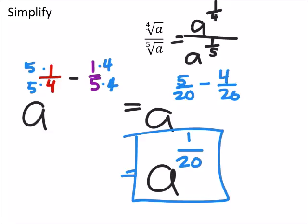I suppose if you wanted to write this in radical form, it'd be the twentieth root of a. But, I'm okay with a to the power of one-twentieth.